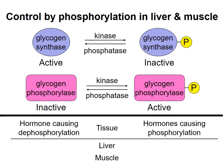Which form predominates depends on hormone signals. Insulin is a hormone that the pancreas releases into the bloodstream when blood glucose levels are high. In liver and skeletal muscle, insulin in the blood stimulates dephosphorylation of both glycogen synthase and glycogen phosphorylase, thus promoting glycogen synthesis. This makes perfect sense, because if the concentration of glucose in the blood is high, that is a perfect time for both tissues to store some of that glucose as glycogen. When blood glucose levels fall, insulin is cleared from the blood and the hormone glucagon predominates. The presence of glucagon in the blood causes phosphorylation of glycogen synthase and glycogen phosphorylase in liver, promoting glycogen breakdown.